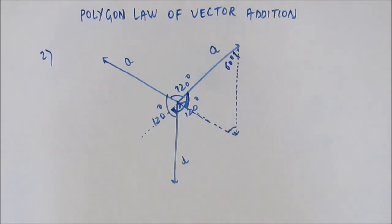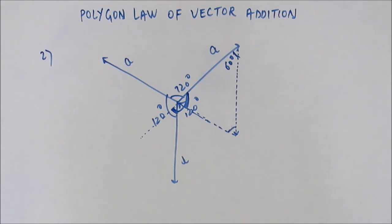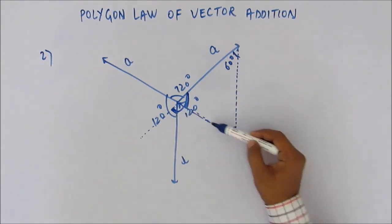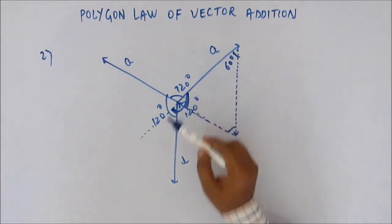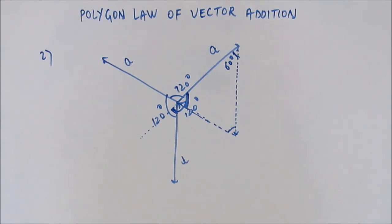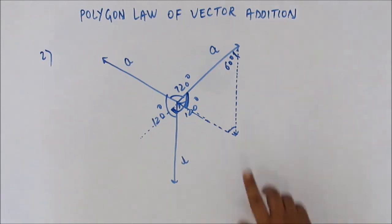The polygon law says the resultant is the nth side of the polygon joining the head of the last vector to the tail of the first. Here the head of the last vector and the tail of the first vector coincide, so the line joining them has zero length. Therefore the magnitude of the resultant vector is zero.